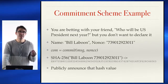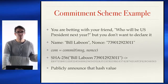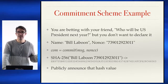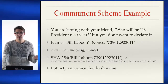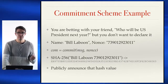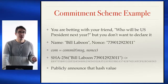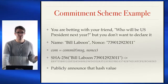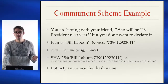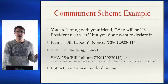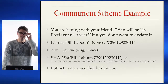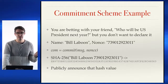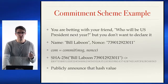But you don't want to declare it, because you don't want to bias what your friends think. So you decide that the person who will be president is Bill Laboon, and you come up with a randomized or pseudo-random nonce: 739-01292-3011.